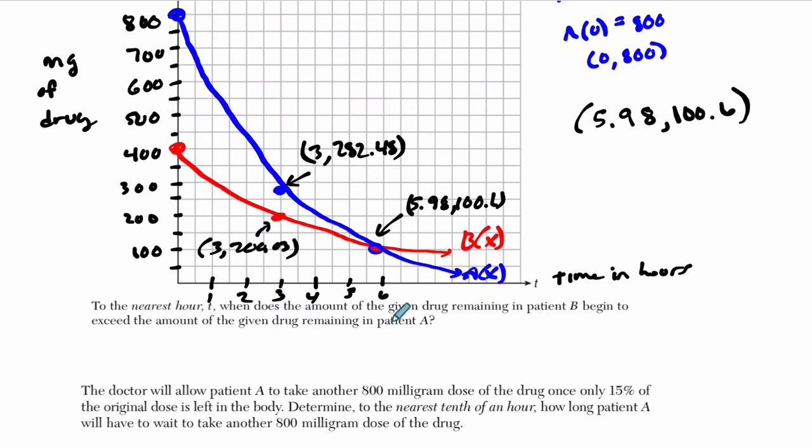To the nearest hour, when does the amount of the given drug remaining in patient B begin to exceed the amount of the drug remaining in patient A? Okay. So at first, there's less drug in patient B, right? But past this point here, the nearest hour, which is the sixth hour, so six hours, you don't need to explain anything here. After that point, there's more of the drug in patient B than there is of the drug in patient A, right? Because, again, the decay rate of A is larger, so it loses more faster.